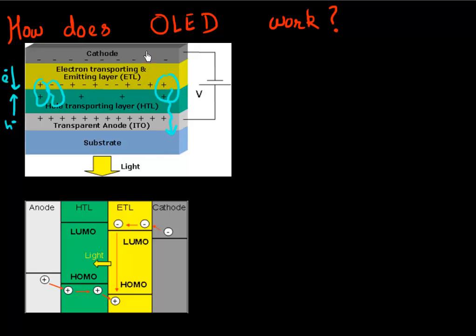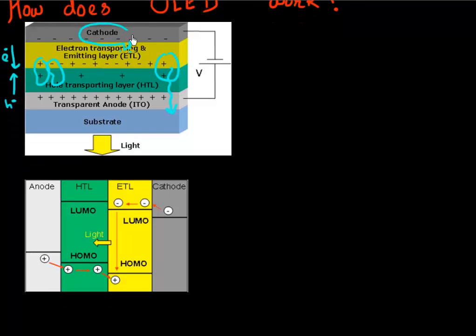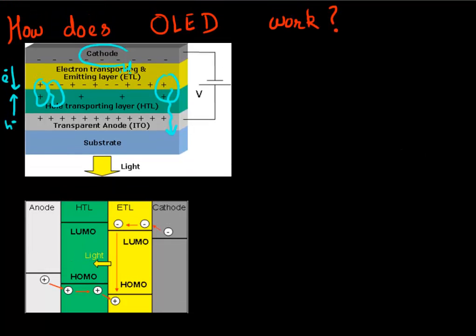To supply these electrons and holes, you have a cathode, typically placed at the bottom of the display. Then you have an anode on the top, made of a transparent conducting oxide. The most common material for making that is indium tin oxide, or this ITO layer.